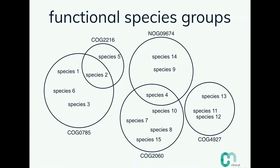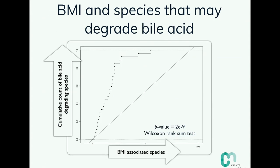Here's an example of such an association to BMI. You see the expected association between BMI and all individual species, and here is the association for the group of species that can deconjugate bile acids — the first step in bile acid degradation — showing a very nice association between species that can degrade bile acids and being lean. These associations also come with a legend describing which species share that function, and physiologists recognize bile acid as key for regulating satiety and metabolism in humans.